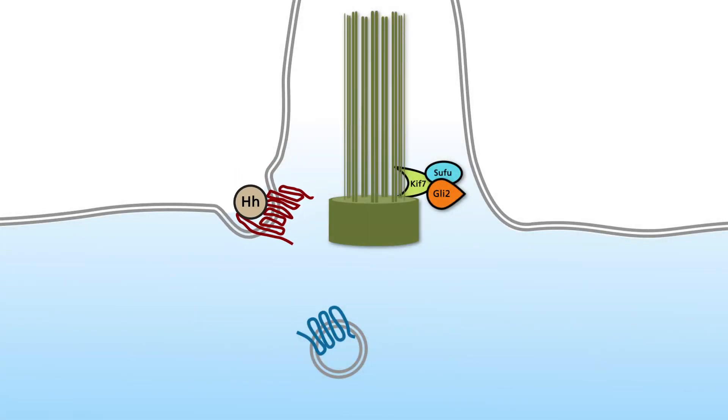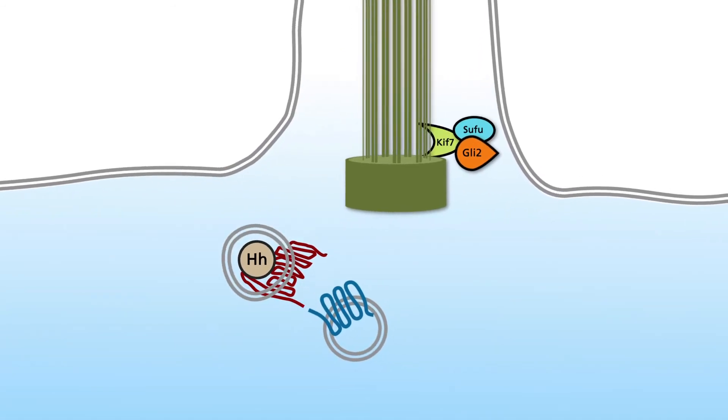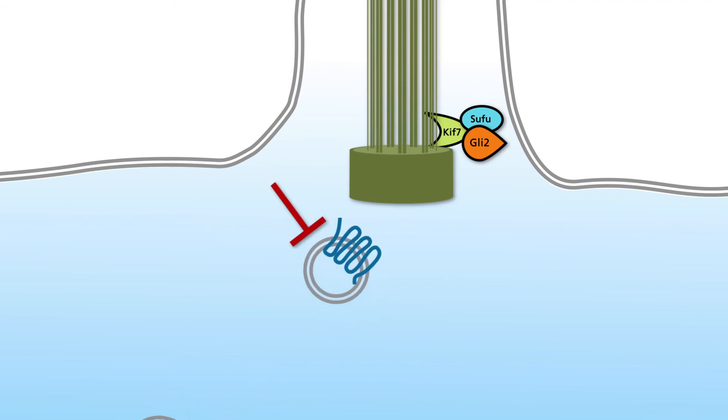When patched is internalized upon hedgehog binding, smoothened moves into the membrane of the primary cilium. The translocation of smoothened into the primary cilium is blocked by itraconazole, which is approved as an antifungal drug by the U.S. Food and Drug Administration.